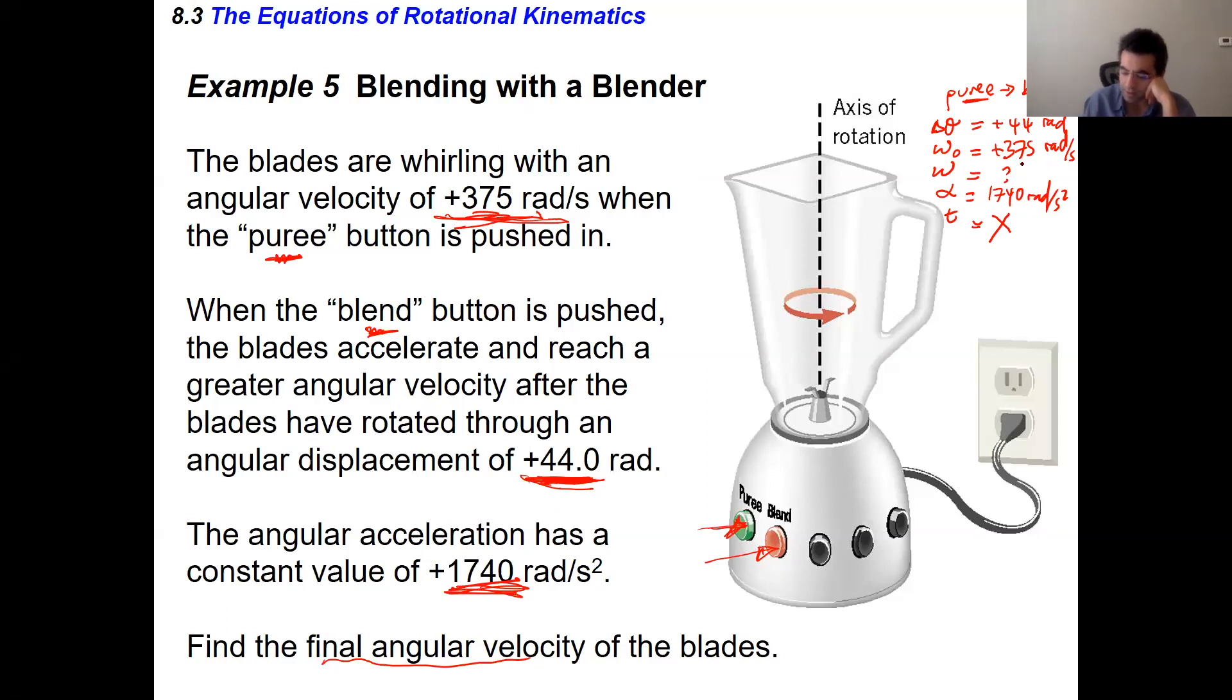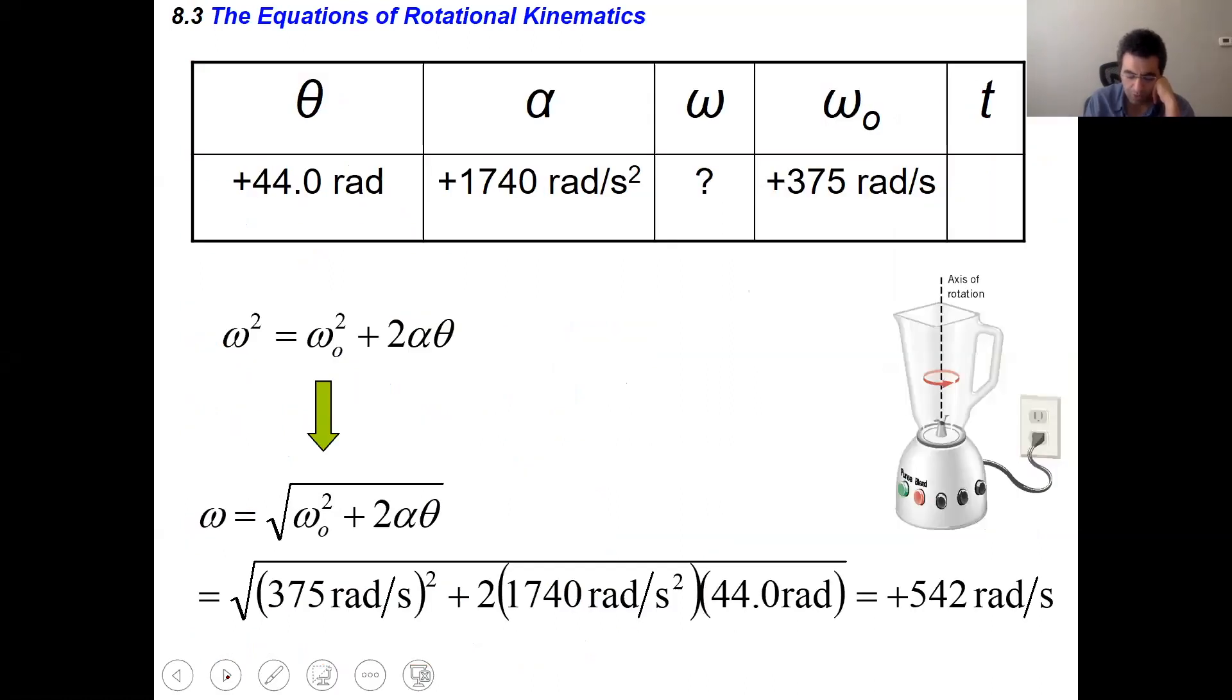I don't care about the time, so the equation I'm going to use is the one that doesn't have time, which is this one. The final angular velocity squared equals the initial angular velocity squared plus twice the acceleration times the displacement. Plug in the numbers and I find the final angular velocity.